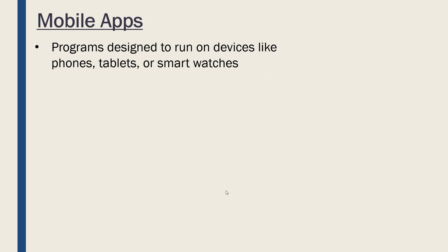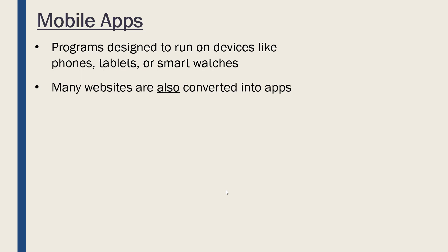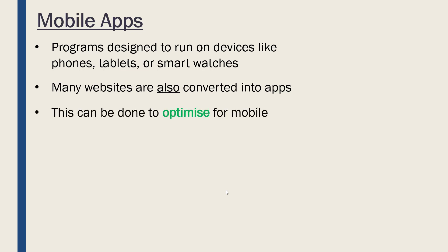The last thing to discuss is mobile applications, or apps. These are programs designed to run on devices like phones, tablets, and smartwatches. Many websites are also converted into apps, though I want to stress that a website and an app are separate things — a website is stored in one place and an app in another. Facebook has a website but also has an application; they may be written by different people but are owned by the same company. Apps are often made to optimize for mobile devices.